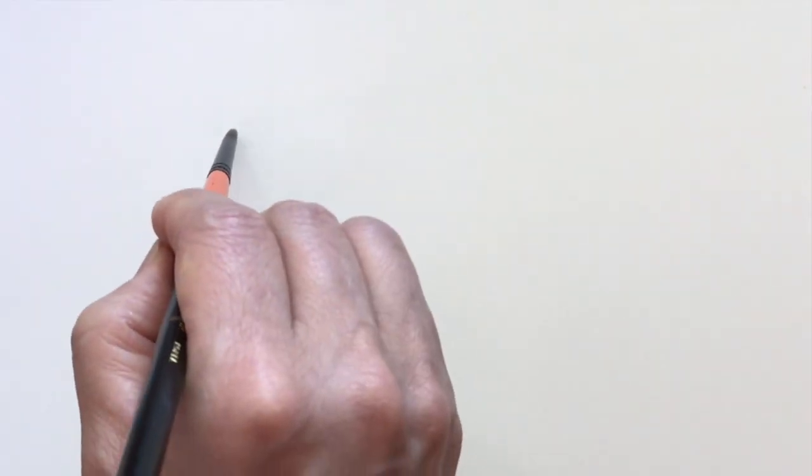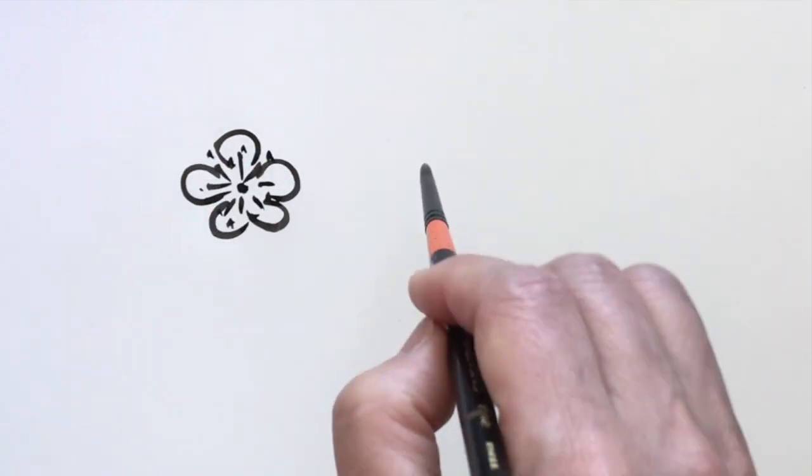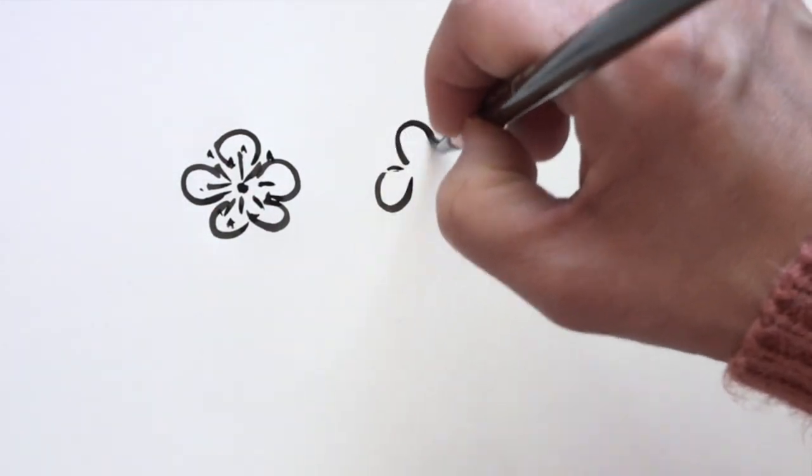Now, we're going to practice drawing the blossoms from all different angles. Front, leaning to the left.